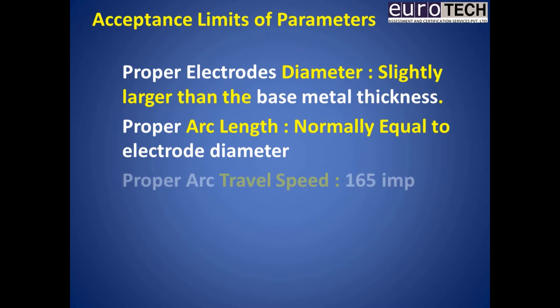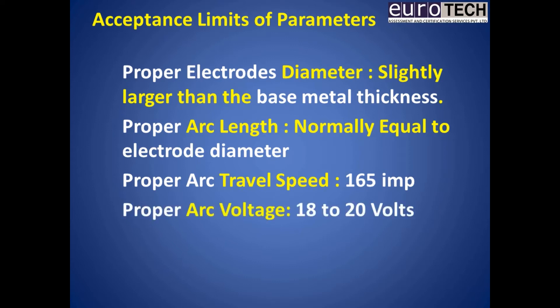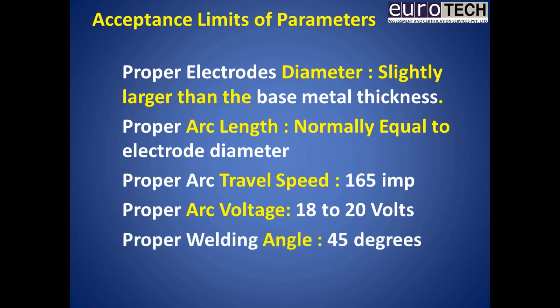Proper arc length is normally equal to the electrode diameter. Proper arc travel speed is 165 IPM. Proper arc voltage is 18 to 20 volts. Proper welding angle is 45 degrees.